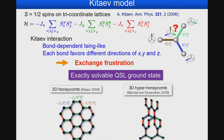The Kitaev interaction is a bond-dependent Ising-like interaction where each bond favors different directions: x, y, and z. The spins cannot simultaneously satisfy all three different configurations, leading to exchange frustration. In the 2D honeycomb lattice and the 3D hyper-honeycomb lattice, an exactly solvable quantum spin liquid ground state appears.